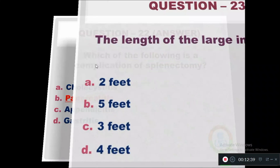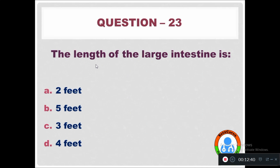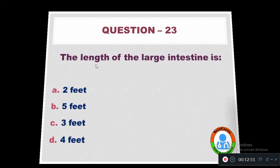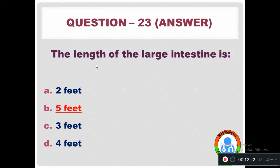Question 23: The length of the large intestine is — Option A: 2 feet. Option B: 5 feet. Option C: 3 feet. Option D: 4 feet. The length of the large intestine is approximately 5 feet.